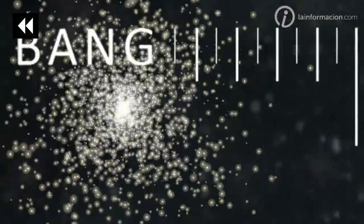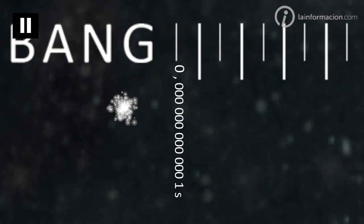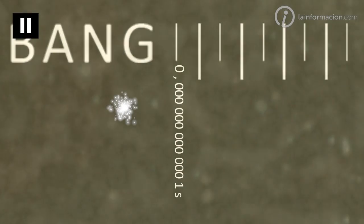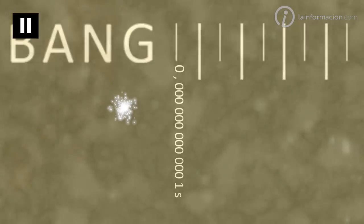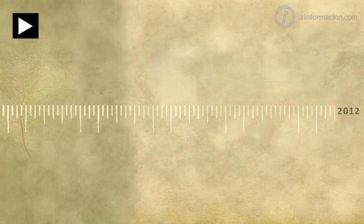One trillionth of a second after the great explosion, even before the matter as we know it happened, something was condensed in space. It was a type of soup we now call the Higgs field, which is imperceptible today but still present in the universe.